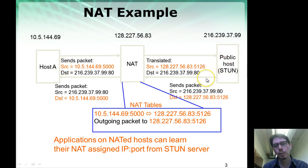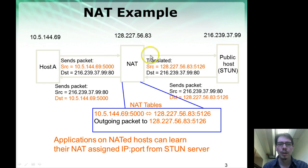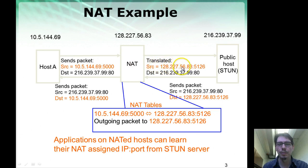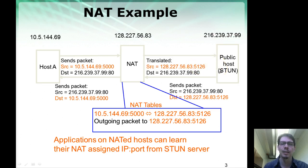A public node could be a STUN server. What the STUN server does is it tells the host — by sending inside the payload of the message — what address the packet came from. So host A can discover that its address on the edge of the NAT is, for example, 128.7.56.83 with a specific port, by asking the STUN server to reflect back what address it saw the packet coming from.